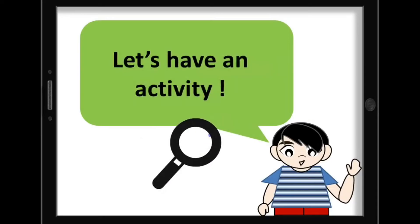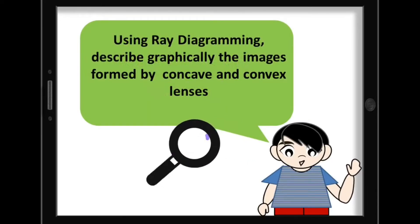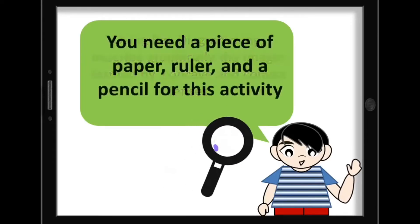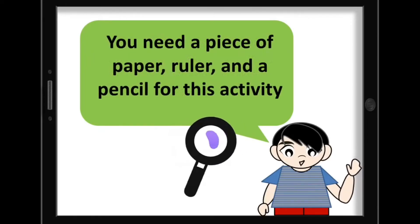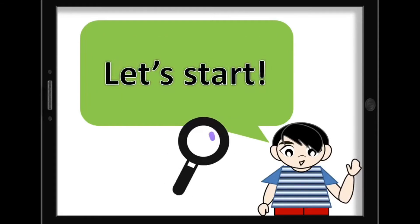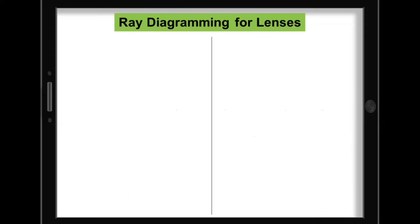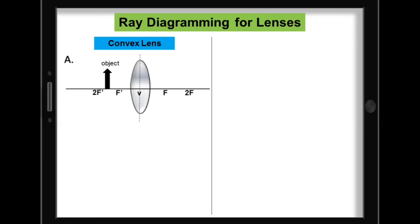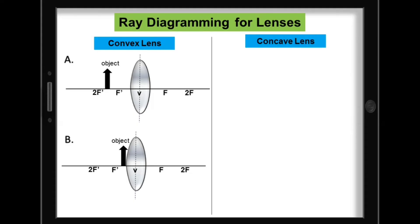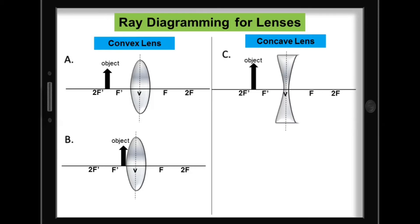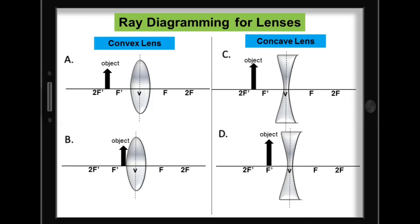Let's have an activity. Using ray diagramming, describe graphically the images formed by concave and convex lenses. You need a piece of paper, ruler, and a pencil for this activity. Copy the following diagrams on a piece of paper. For convex lens: for A, the object is located between 2F and F; for B, the object is located between F and V. For concave lens: for C, the object is located between 2F and F; and for D, the object is located at F. You may pause this video as you perform the activity and continue to play if you are done.